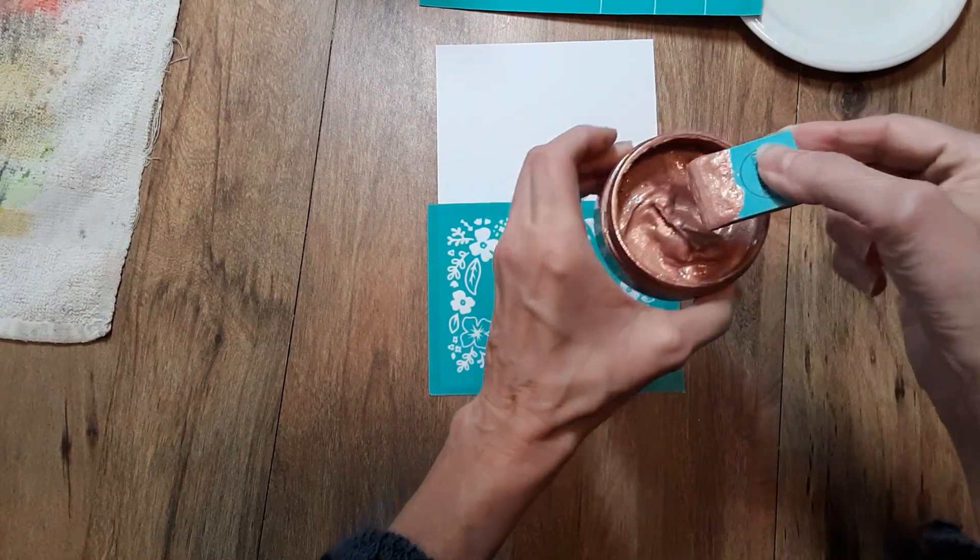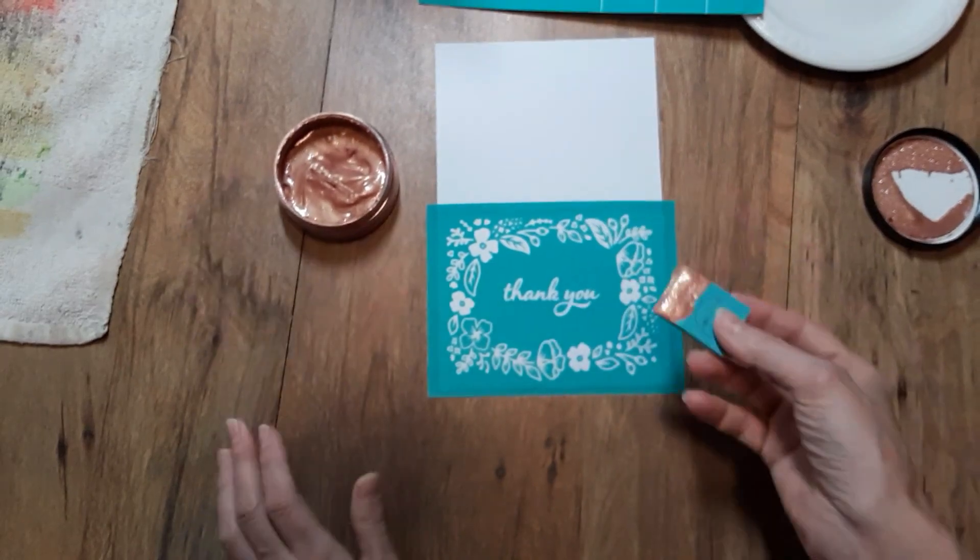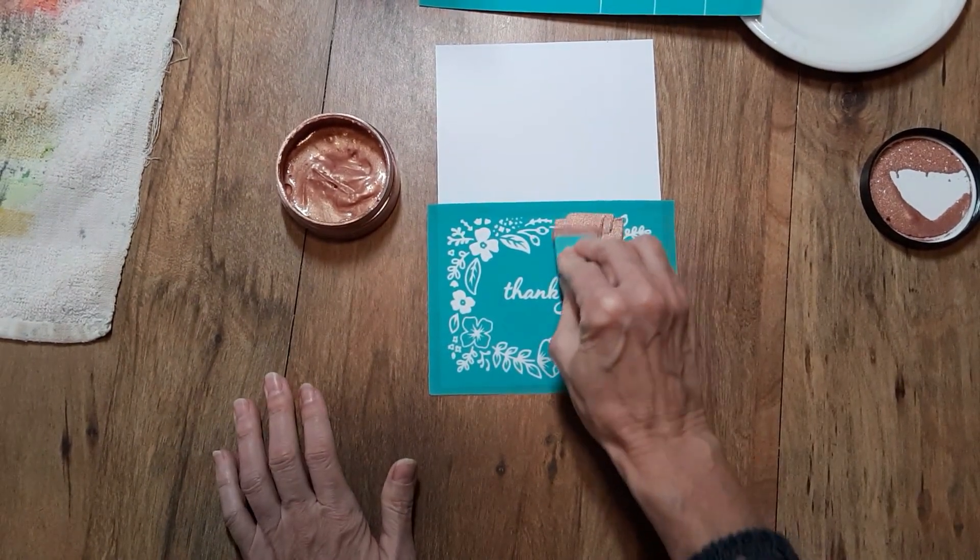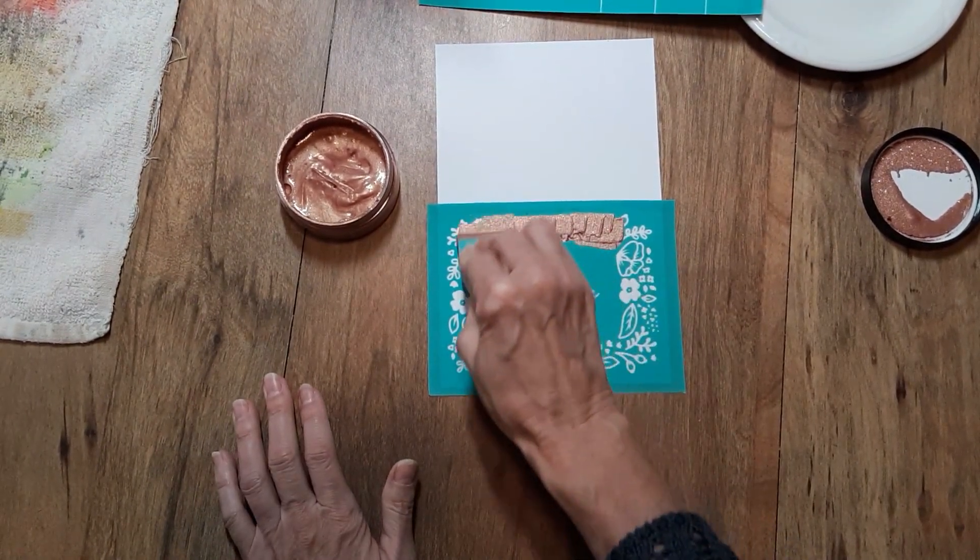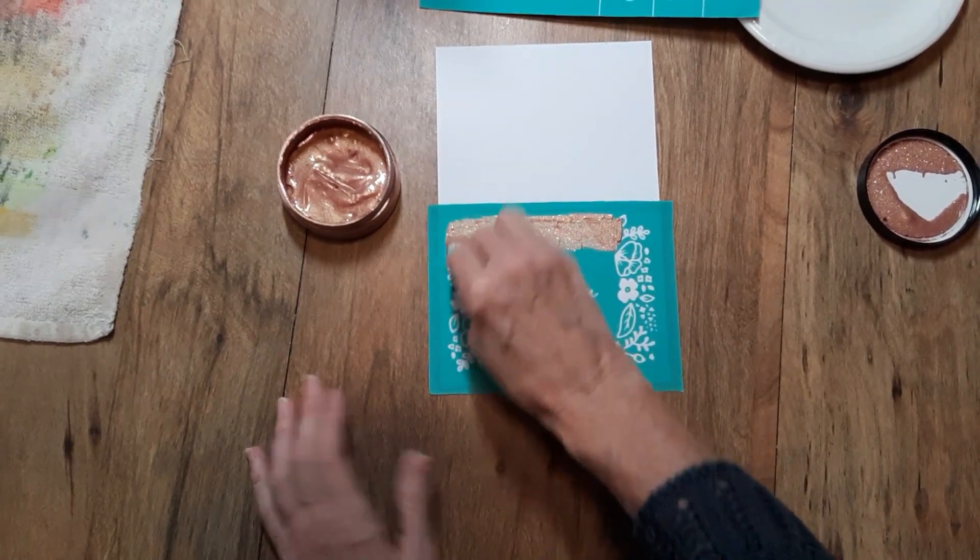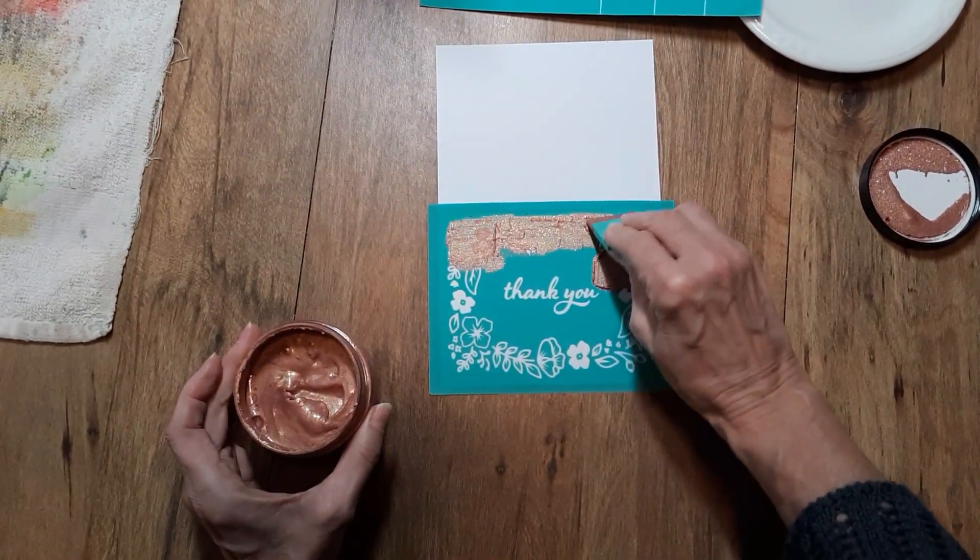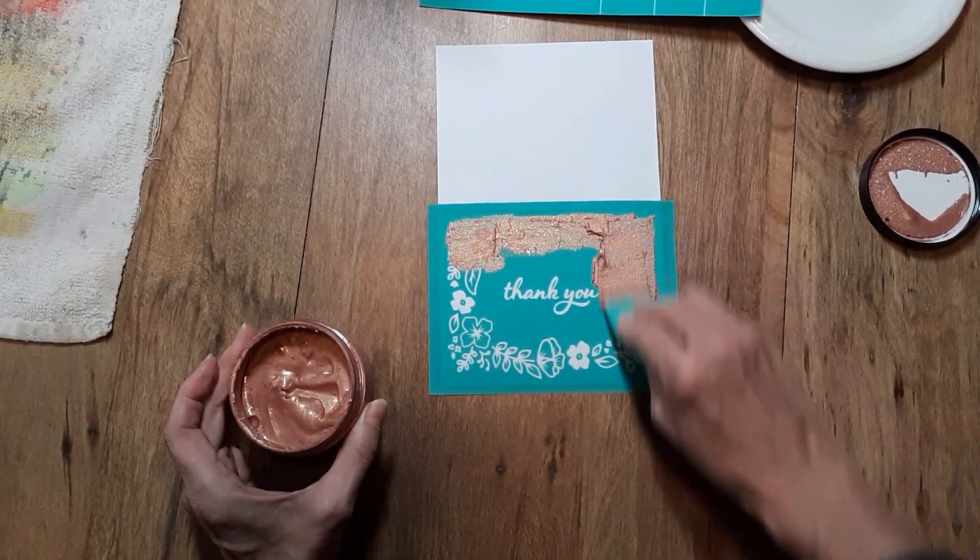So, all I do is take my mini squeegee here. It has a bubble edge. I just put it in the paste. And I generously apply it to my transfer. This is a silkscreen transfer. Like I said, it is reusable. And I generously apply it because I can always scrape off the excess. I just want to make sure I have good coverage.